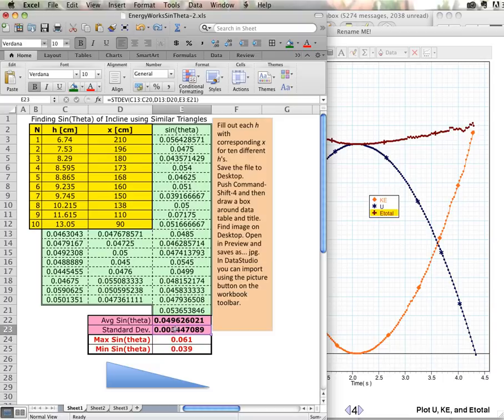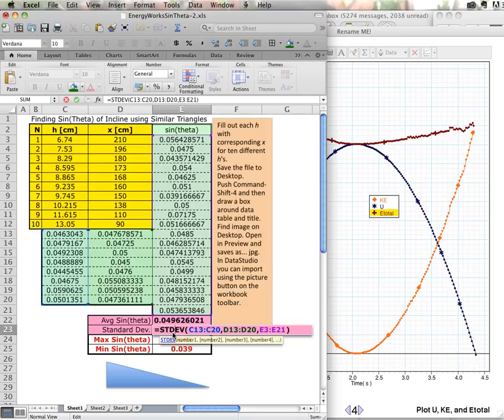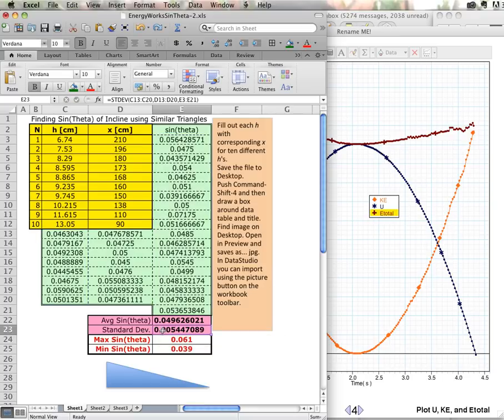Now we can see our sine theta is 0.0496 and our standard deviation is at the third decimal place. So that's the precision level right here, the 5 at the third decimal place.